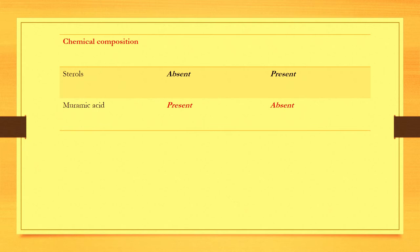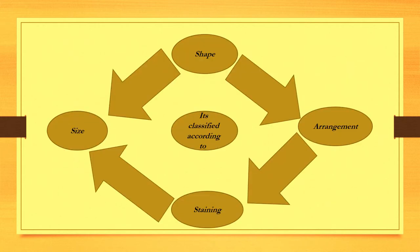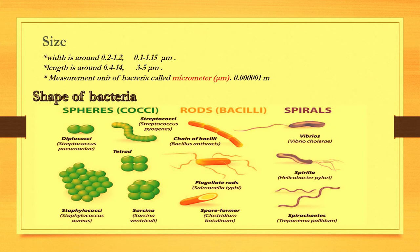Bacteria are classified according to four factors: shape, size, pigment, and arrangement. In this video, I will talk about size, arrangement, and shape of bacteria. The size of bacteria varies from one to the other, and I have written some of the differences, but you are not required to memorize them all.